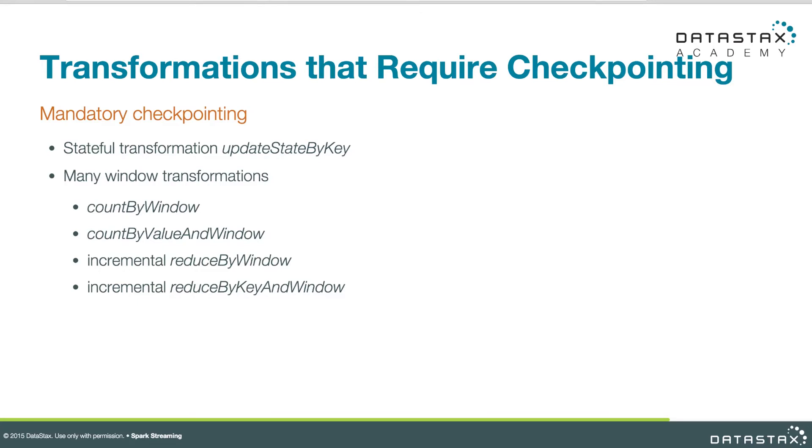This is necessary in the event of failure — we have to rewind to the previous checkpoint and replay the data persisted from the stream. Checkpointing is optional for some transformations, but required for these: updateStateByKey, countByWindow, countByValueInWindow, reduceByWindow, or reduceByKeyInWindow. If you're using those, you'll have to enable checkpointing. Otherwise, it's optional, and we'll talk about the trade-offs that would influence that decision.